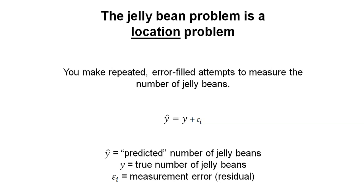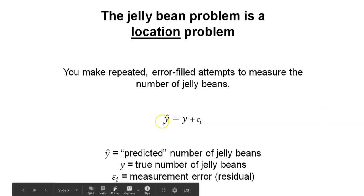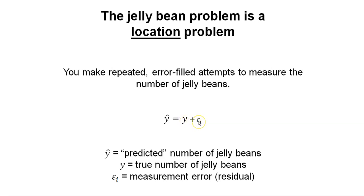For the jelly bean problem, we can continue to make error-filled attempts that measure the number of jelly beans. If y hat is the predicted number of jelly beans, like 100, the true number of jelly beans, 260, plus some amount of error, can be added up to get that predicted number of jelly beans. But you may have to subtract or add a different amount of error depending on the prediction. This is why we can think of the jelly bean problem as a location problem. We're interested in how far away each prediction is from the true value.